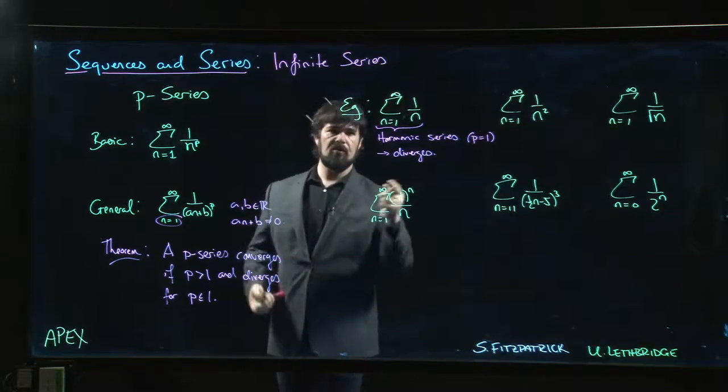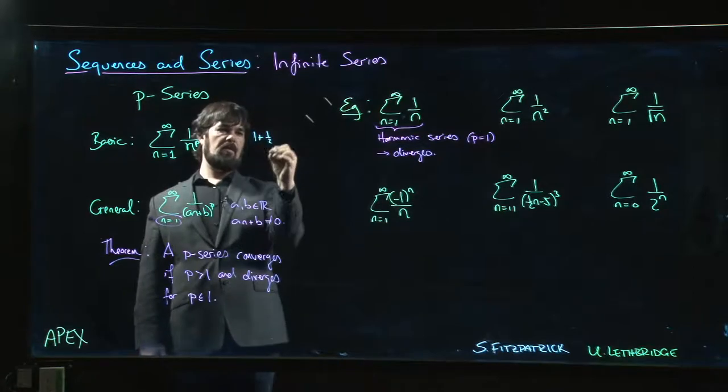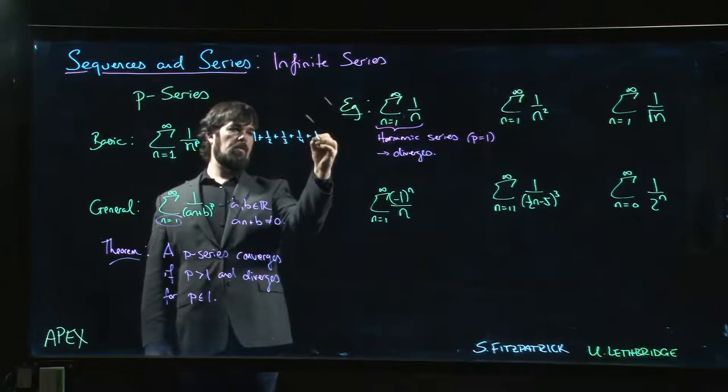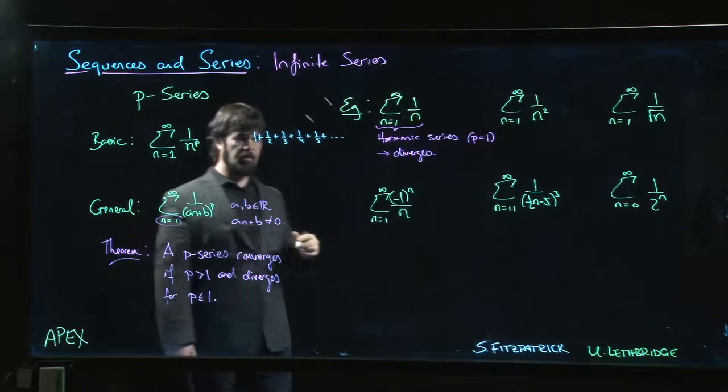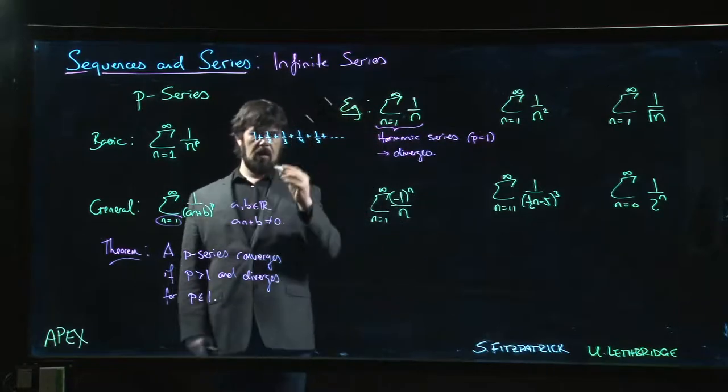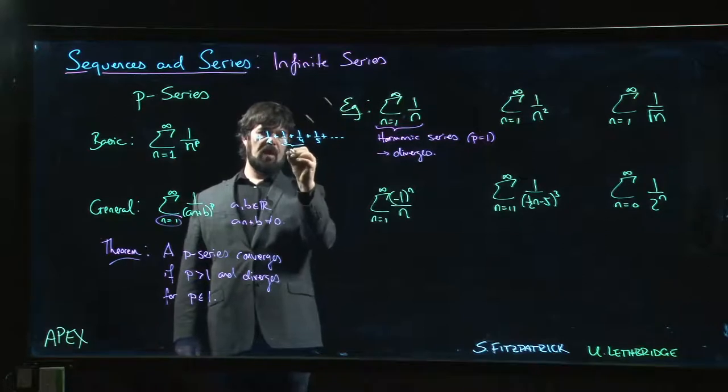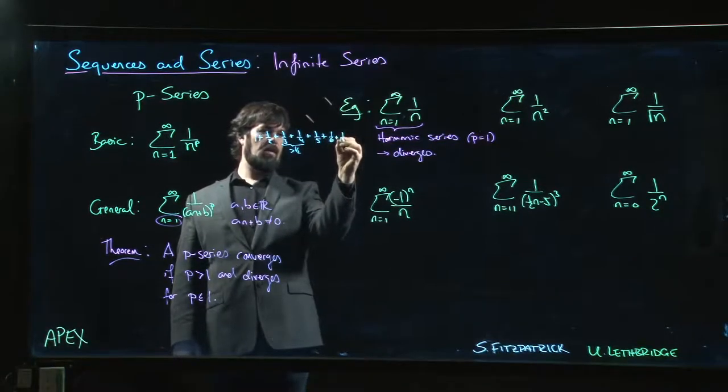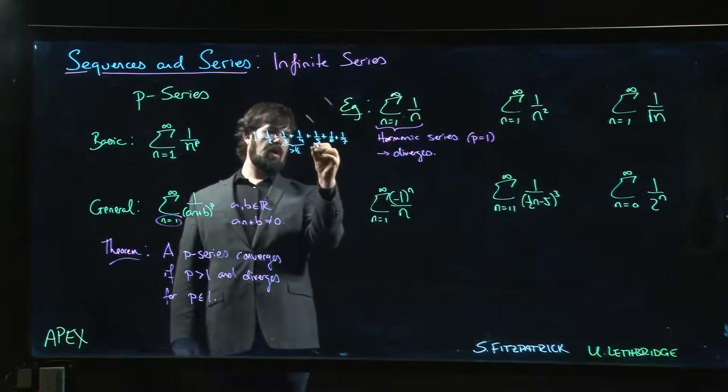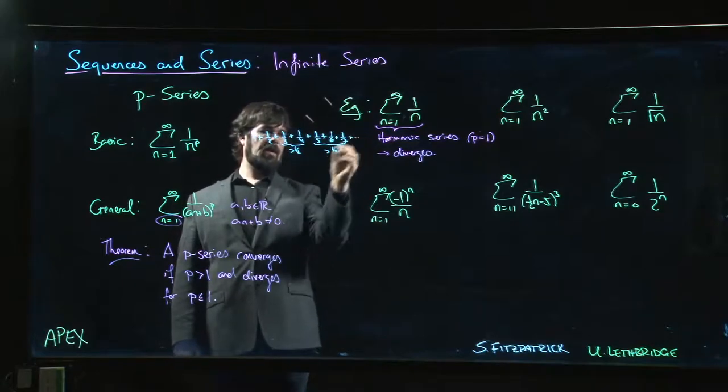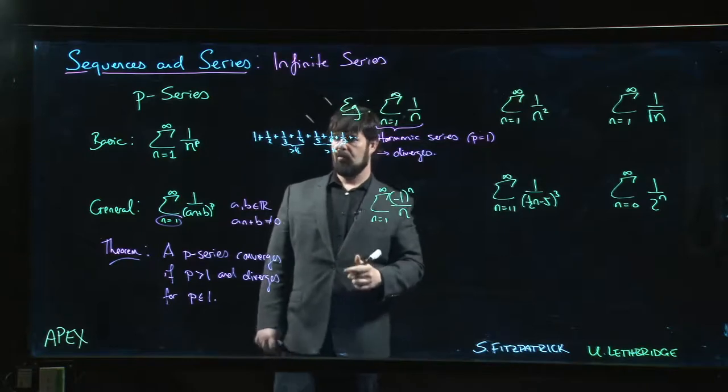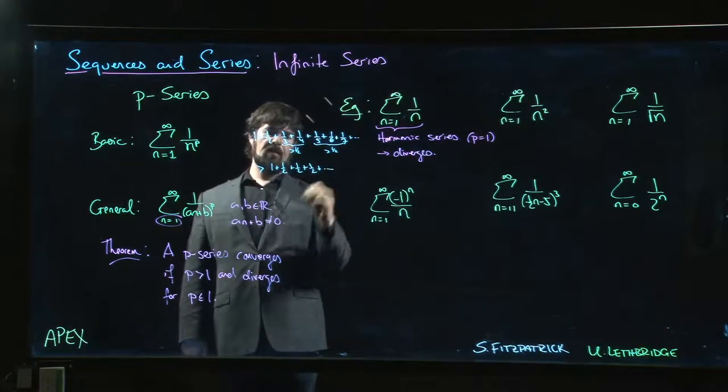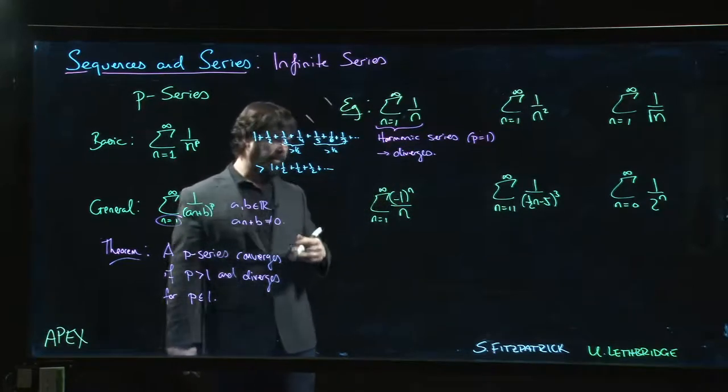The classic way that you do this is you say, my sequence looks like one plus a half plus a third plus a quarter plus a fifth and so on. And you start grouping things together. These two terms, they add up to something that's bigger than a half. And then if I added the next three terms - a fifth plus a sixth plus a seventh - those are going to add up to something that's bigger than a half and so on. By grouping things appropriately, we can say the whole thing is bigger than one plus a half plus a half plus a half, and that's going to go to infinity if you keep adding one half forever.